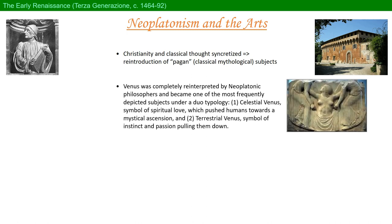Venus, the great sinner of the pagan gods for having committed adultery with Mars, was completely reinterpreted by Neoplatonic philosophers. She became one of the most frequently depicted subjects for Renaissance artists under a dual typology. The first is celestial Venus, symbol of spiritual love, which pushed humans towards that mystical ascension. The second aspect is terrestrial Venus, who symbolizes the instinct and passion pulling humankind down. This dual typology is traceable to two separate stories about her birth. Terrestrial Venus would simply be the daughter of Zeus by the usual means of procreation.